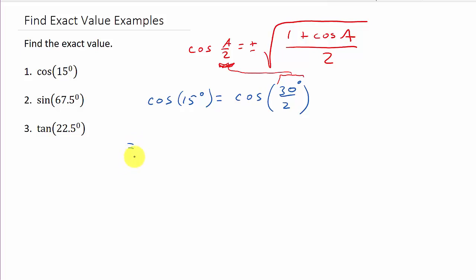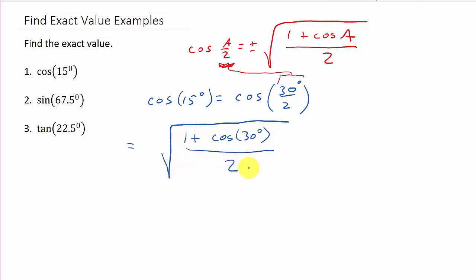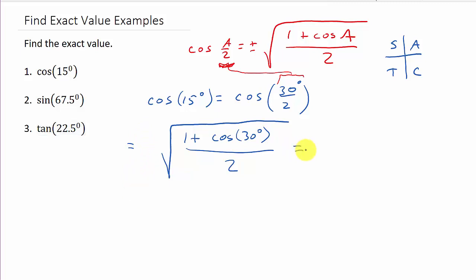Let's work it. We have the square root of 1 plus cosine of 30 degrees, all over 2. Notice it's plus or minus — 15 degrees is in the first quadrant, and remembering 'all students take calculus,' all trig functions are positive in the first quadrant. So cosine of 15 degrees is positive, and we'll use the positive sign. And you know if there's no sign in front, it's assumed positive.